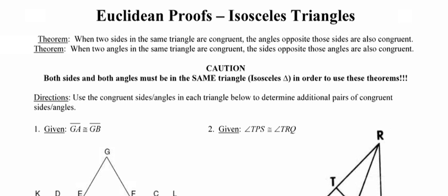The first theorem says that when you have two sides in the same triangle that are congruent, we know that the angles opposite from those sides must also be congruent. If we think about what's going on in a diagram, it makes this theorem easier to understand — when you have two congruent sides, the angles opposite those sides also have to be congruent.